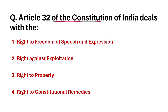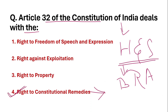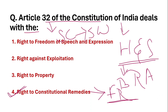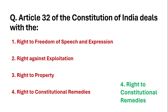Article 32 of the Constitution of India deals with what? Article 32 is called the heart and soul of the Indian constitution because it provides the right to constitutional remedies, which protects our fundamental rights. If fundamental rights are violated, Article 32 allows the Supreme Court to issue five types of writs. The High Court issues writs under Article 226. The five writs are: Habeas Corpus, Mandamus, Certiorari, Prohibition, and Quo-Warranto. You must remember these for the exam.